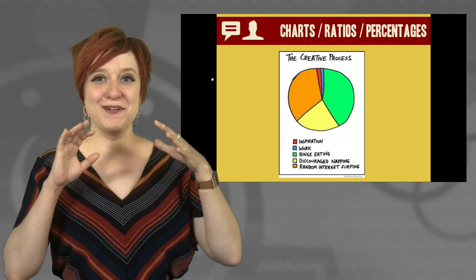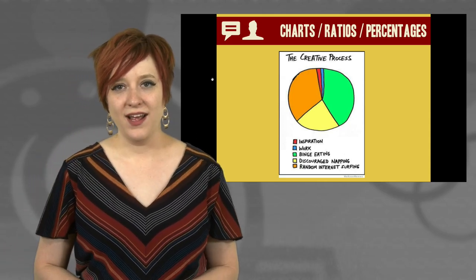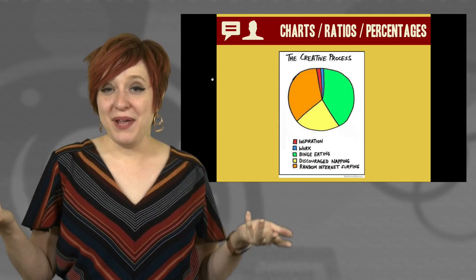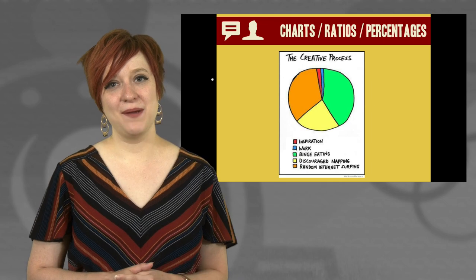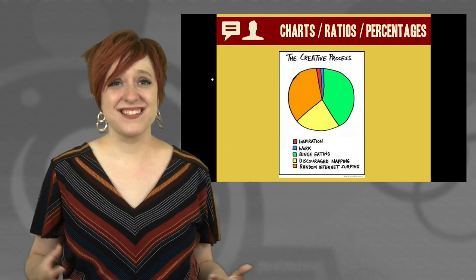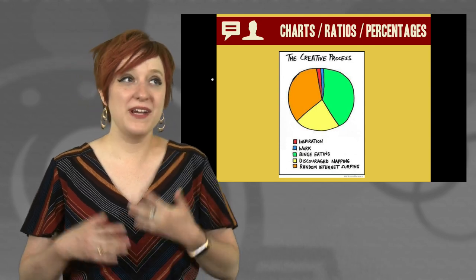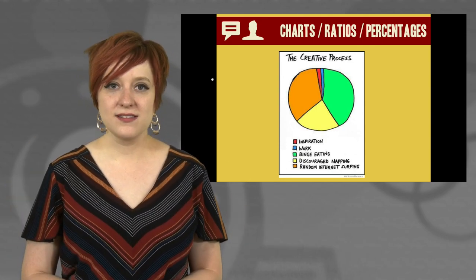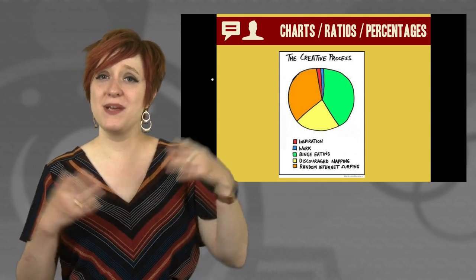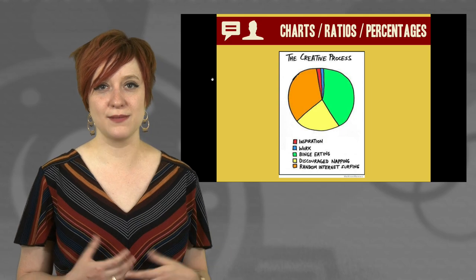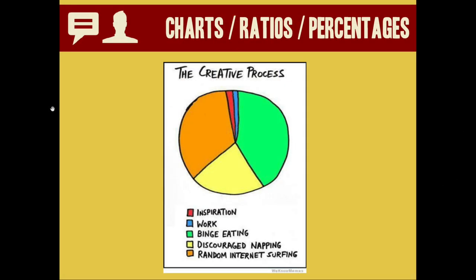So now that we've looked at some examples of the bad, I want to show you some good and some potential options for visualizing data that you may not have considered. We think sometimes that visualizations have to be complex or statistical or scientific, but they can also be creative or whimsical and still get the point across. So here are a few different basic types of visualizations you might think about employing sometime. Charts and ratios and percentages are a great way of showing parts of a whole. Just like this humorous pie chart that shows the creative process is mostly binge eating and random internet surfing with actually very little inspiration or work getting done. I know I feel this way about writing quite frequently.